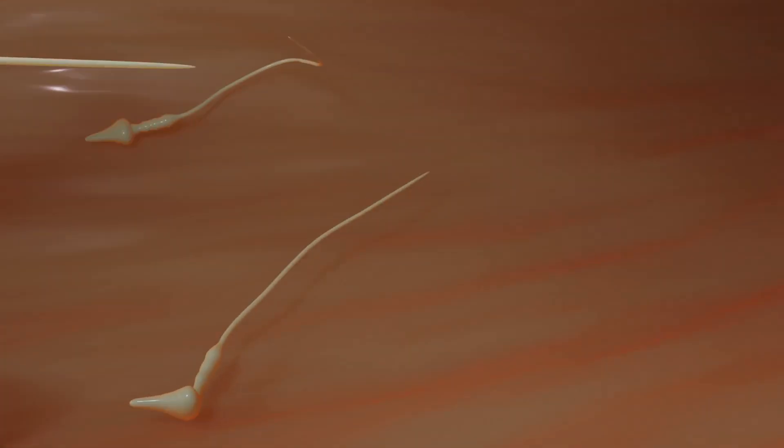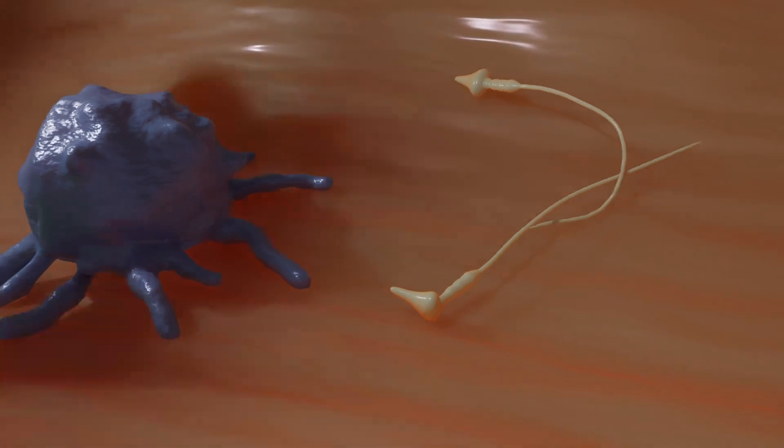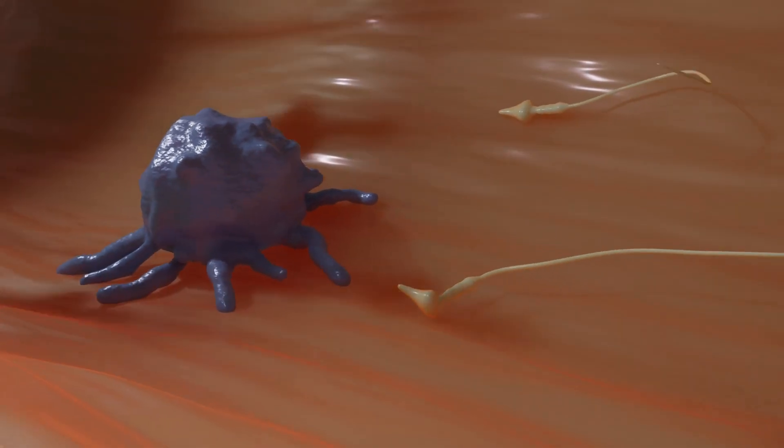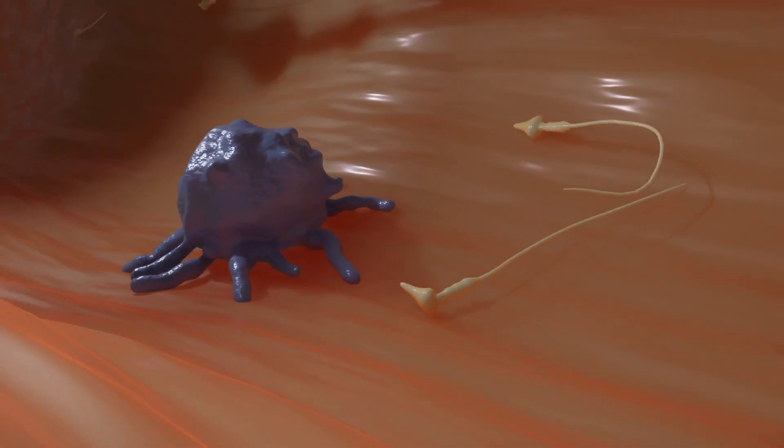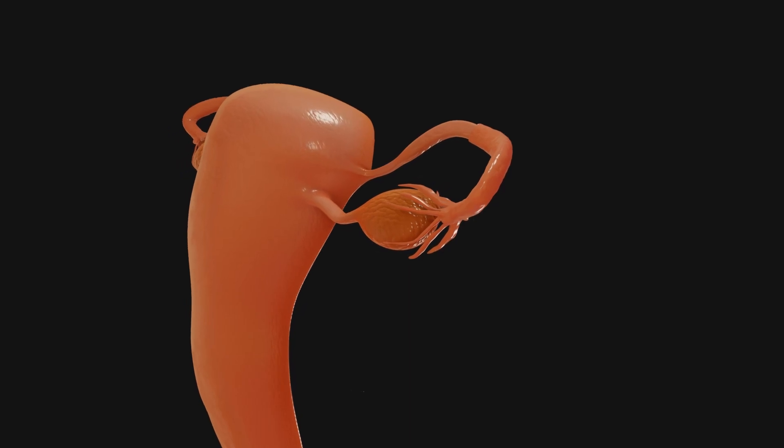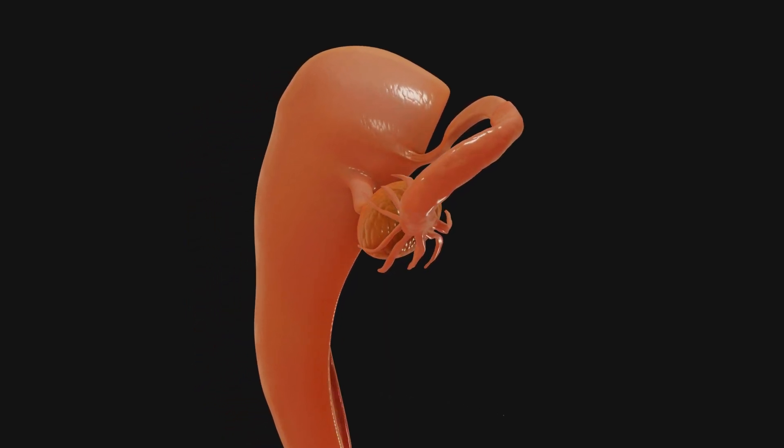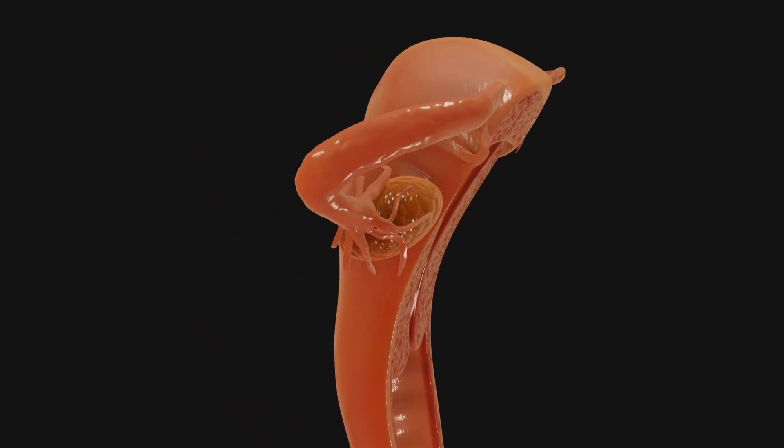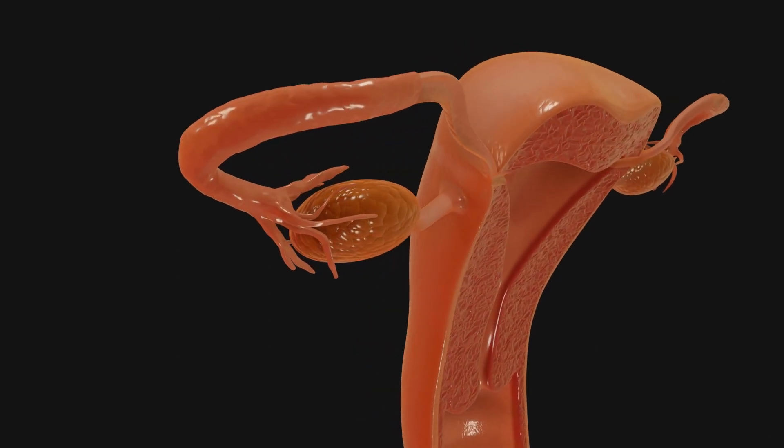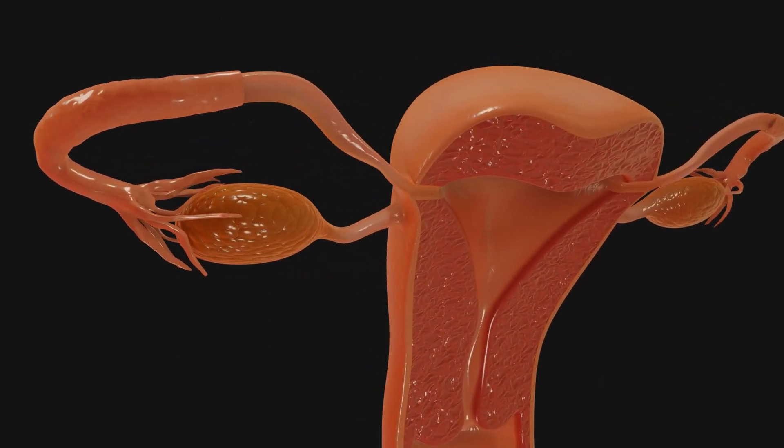Defective and dead sperm are broken down by the woman's immune cells. The ovaries are the female counterpart to the testicles; the female germ cells mature in them. Typically, one egg cell is ready for fertilization per menstrual cycle.